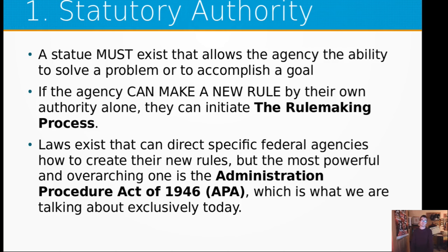What does statutory authorization mean? A statute has to exist that allows the agency the ability to solve their problem or accomplish their goal. Different organizations or agencies, such as the Department of Education or the Department of Energy, cannot make rules without a statute that authorizes it. That authority is given by Congress and by the presidency. If the agency can make a new rule — meaning that a statute exists which allows it — they can begin the rulemaking process. This is step one: they have to check to see if they have the power for it.